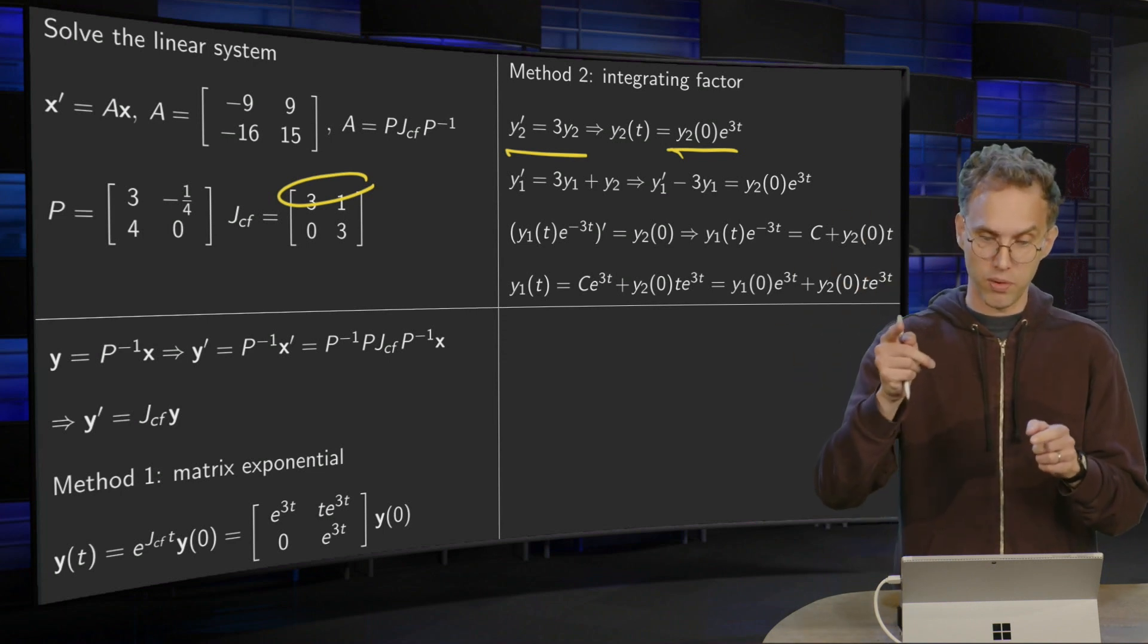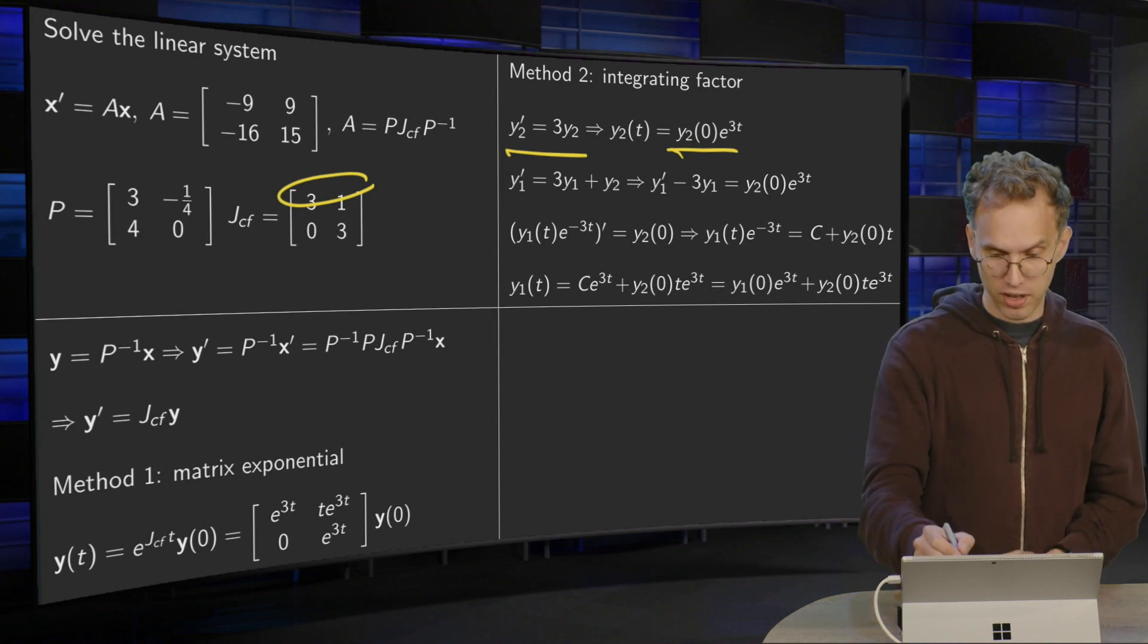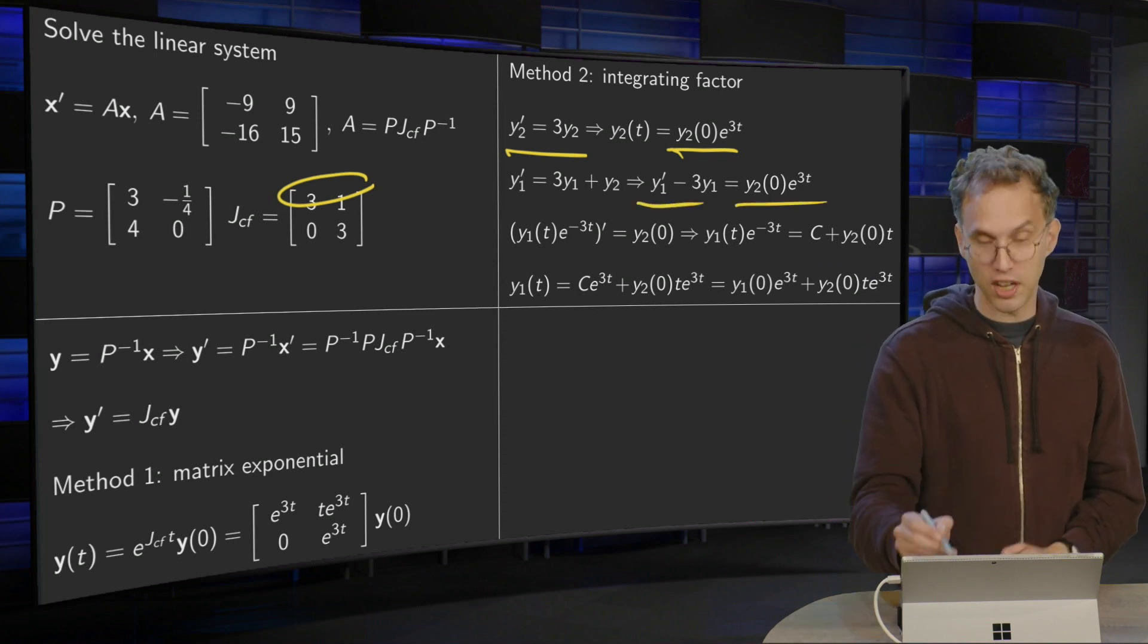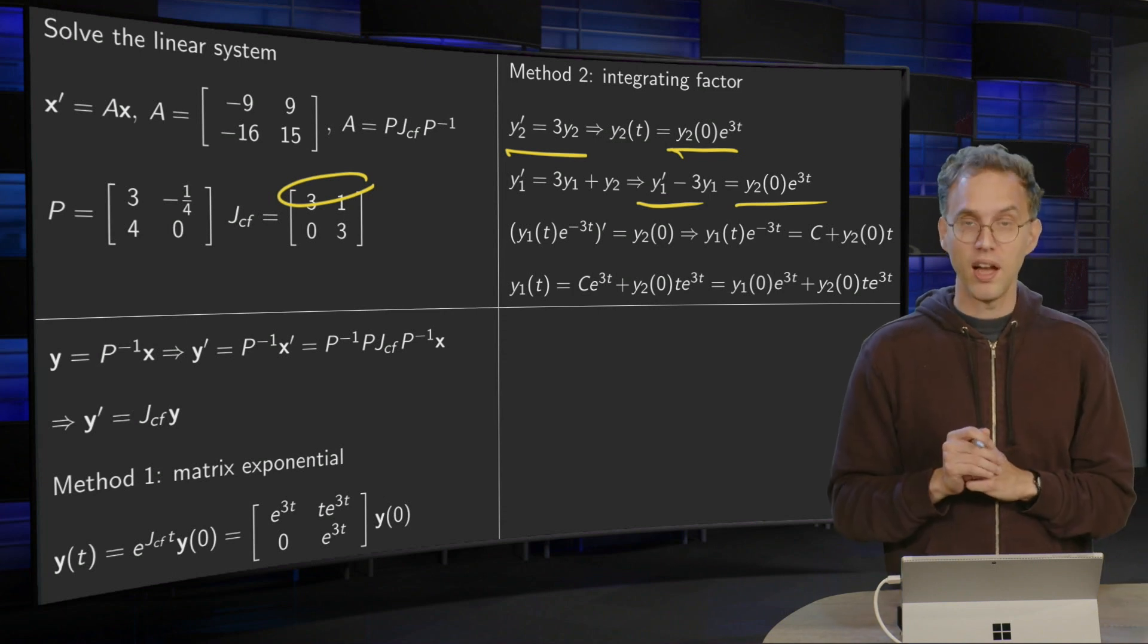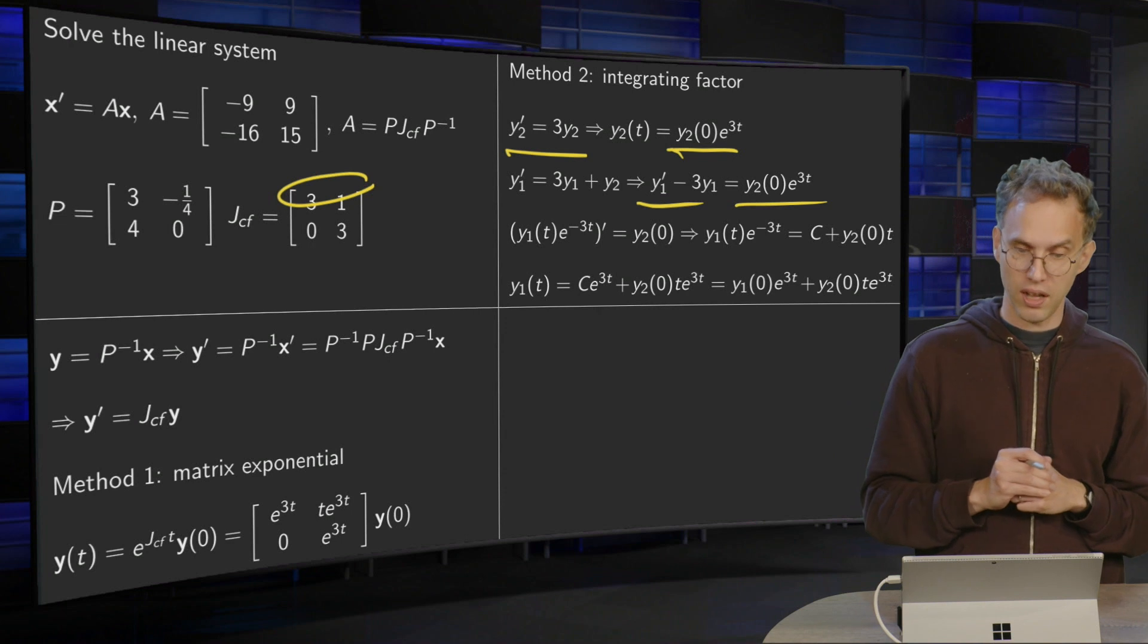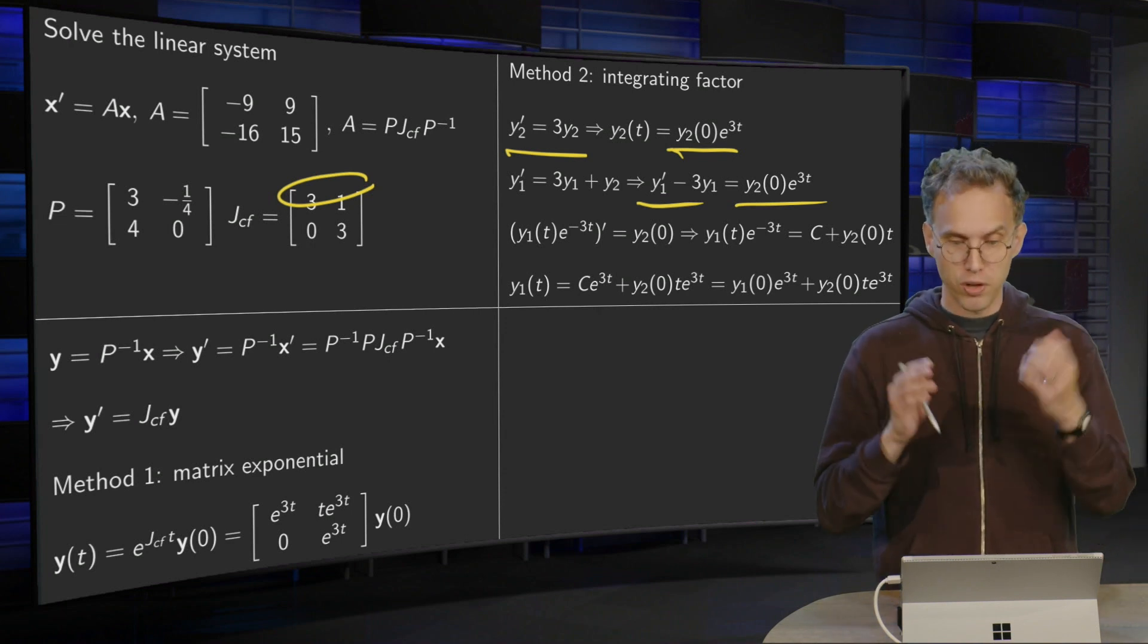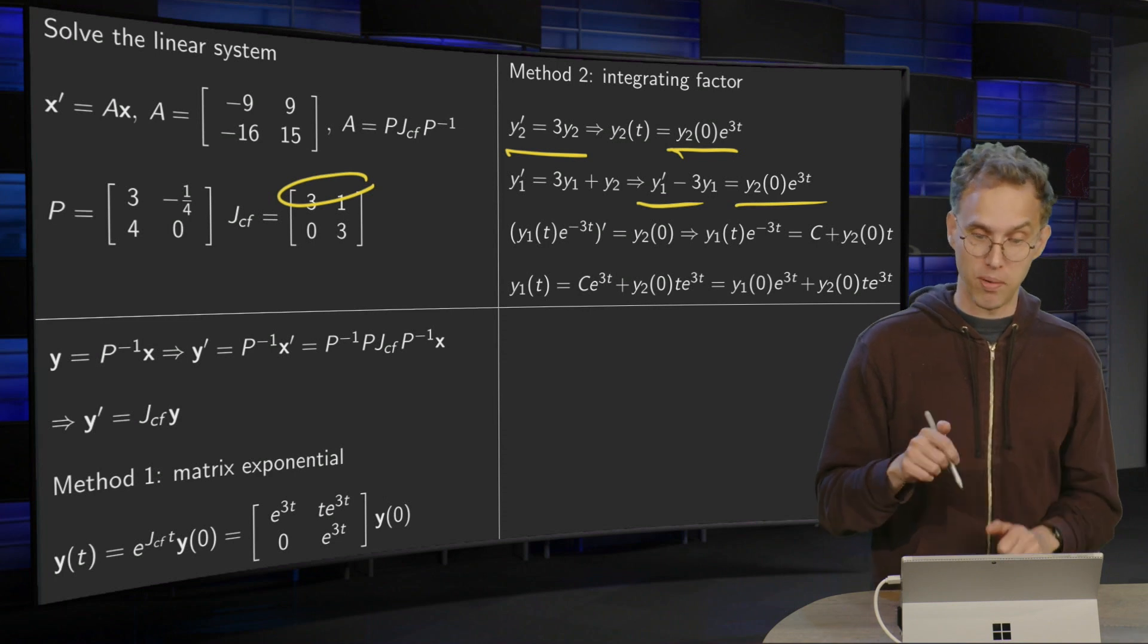Put y1 on the other side. Then you get y1' minus 3y1 equals this right-hand side, which you already know. Your integrating factor is e to the power of minus 3t in this case. So multiply the equation with e to the power of minus 3t.